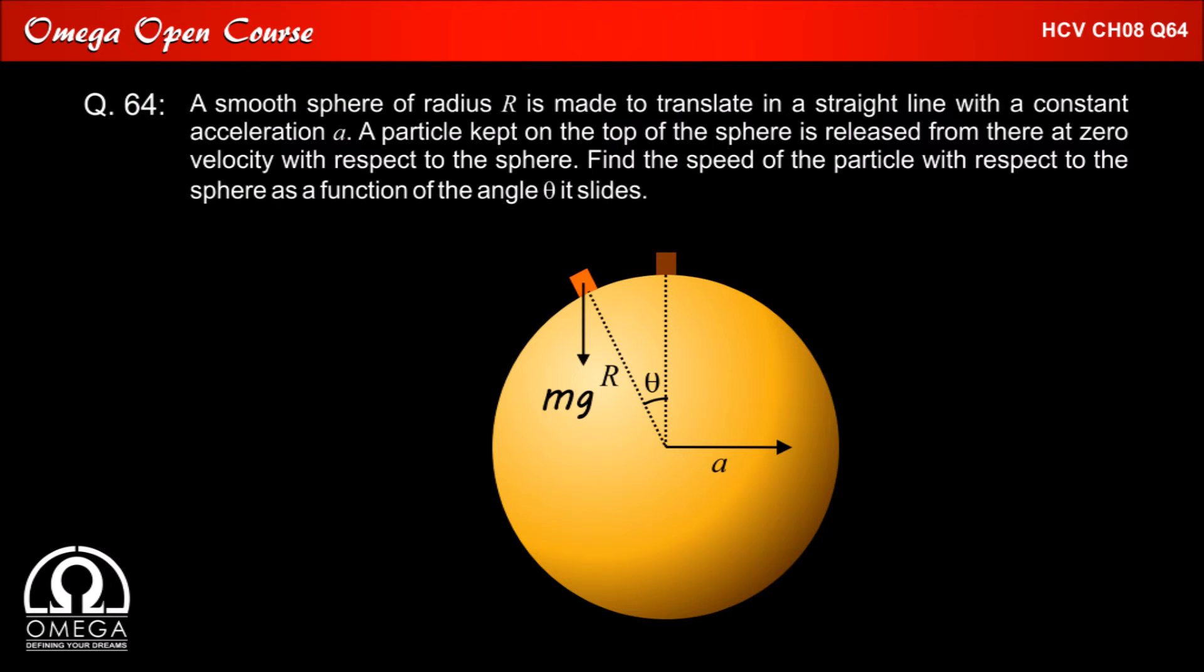Let us first look at the free body diagram of the block in the frame attached to the sphere. The block will experience a gravitational force Mg in the vertically downward direction. And since our frame is moving rightwards with acceleration a, the block will experience a pseudo-force Ma in the leftward direction.